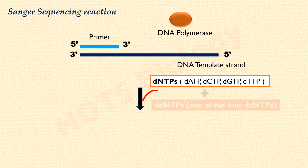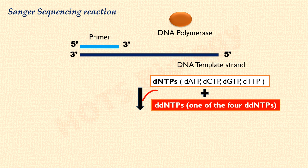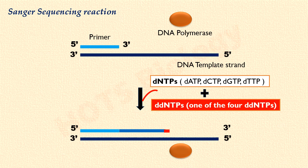As we know, dideoxynucleotides or ddNTPs, when incorporated in an elongating DNA chain, will terminate the DNA synthesis reaction. Since small amounts of ddNTPs are included in each reaction, DNA synthesis will not terminate every time. But DNA polymerase will occasionally insert a ddNTP instead of a dNTP into a growing DNA strand. Since the incorporated ddNTP lacks a 3' hydroxyl group, it cannot form a bond with another nucleotide, and DNA synthesis will terminate. Thus, in each case, we will get partially replicated fragments.